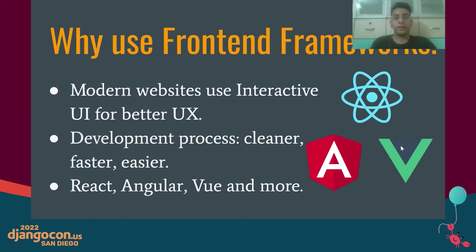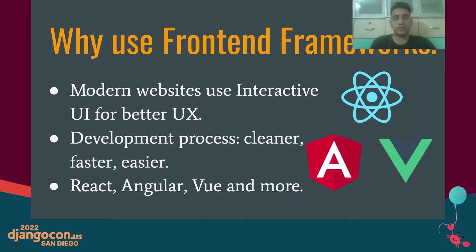Before we talk about integrating React in Django, let's first find out why you should use a front-end framework with Django in the first place. Consider websites like LinkedIn or Instagram — these are popular social media websites where a user can perform many actions: create a post, like, share, repost other people's posts, comment, reply to specific comments, and even chat with other users. There is a lot of interactivity between the end user and the website, and as soon as the user performs an action, the UI of the web page gets updated. Modern websites have a lot of interactive UI to provide a better user experience and keep users engaged.